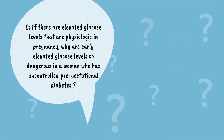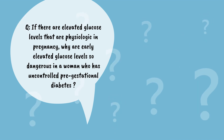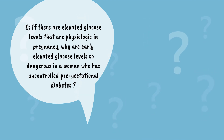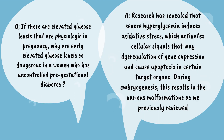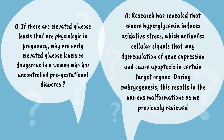If there are elevated glucose levels that are physiologic in pregnancy, why are early elevated glucose levels so dangerous in a woman who has uncontrolled pre-gestational diabetes? The incidence of birth defects increases linearly with the degree of maternal hyperglycemia. Research has revealed that severe hyperglycemia induces oxidative stress, which activates cellular signals that may lead to dysregulation of gene expression and cause apoptosis in certain target organs. During embryogenesis, this results in the various malformations previously reviewed.